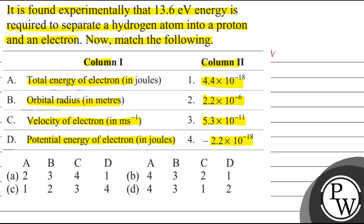The key concept we use here is that 1 electron volt is equal to 1.6×10⁻¹⁹ joules.